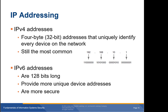IPv6 addresses are 128 bits long and can provide far more unique device addresses than the older standard. IPv6 also contains additional features and is more secure, though adoption is slow and IPv4 is still most common. IPv4 addresses use dotted quad notation, representing each of four bytes as an integer between 0 and 255. Each IPv4 address consists of a network address and a host address. The subnet mask defines the dividing line, and all hosts sharing the same network address are part of a subnet.